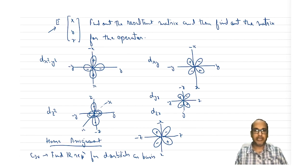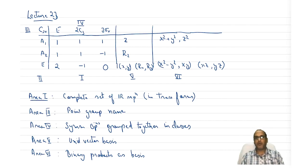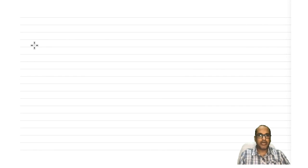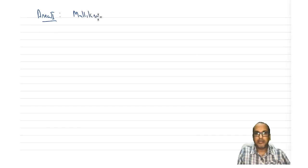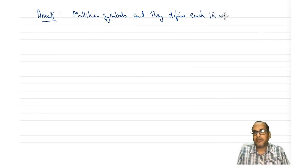Now we know areas 1, 3, 4, 5, and 6. Let us now look at the symbols: A1, A2, E. So far we have been referring to all IR representations as τᵢ — a generic symbol — but these symbols were actually given names by Mulliken, and hence these symbols are called Mulliken symbols. They uniquely define each irreducible representation.